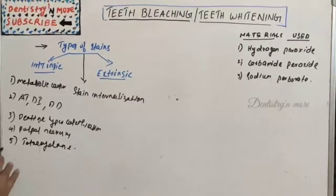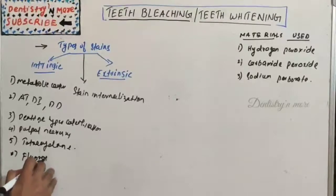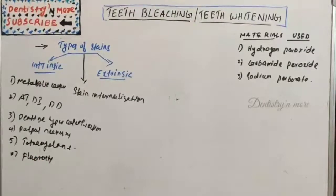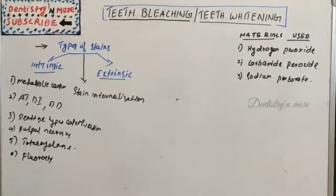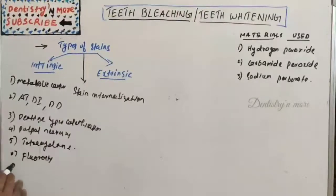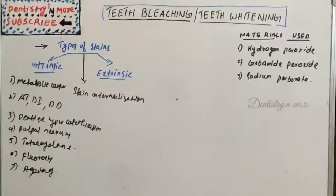Fluorosis results from consumption of water containing fluoride at more than 1 ppm, and ranges from minimal white flakes to severe brown discoloration. Another cause of intrinsic staining is the normal aging process, whereby enamel becomes thinner and dentine becomes thicker and more yellow or grayish-yellow.